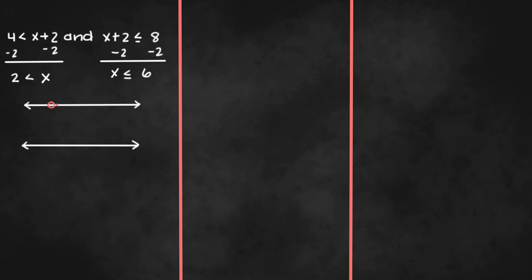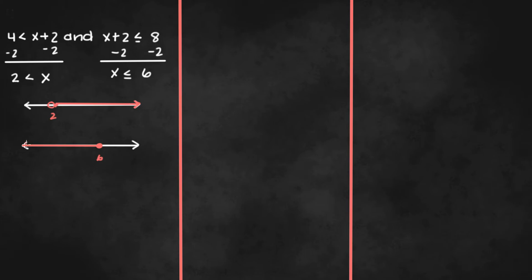The second graph will be x is less than or equal to 6. We have 6 somewhere here, and it's a closed dot since it's less than or equal to. Since x is less than, we're going to be moving in the left direction.